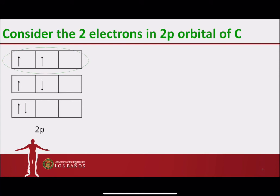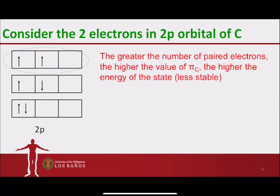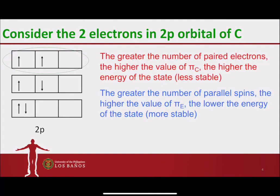According to Hund's rule, the top arrangement is the best arrangement for the two electrons in the 2p orbital because we are minimizing the amount of repulsion if they are in different orbitals, so we have lower amount of π_c. On the other hand, we are maximizing the number of possible exchanges if they are of parallel spin, so this is a more stable configuration because there is a higher amount of π_e that we can account for the configuration.